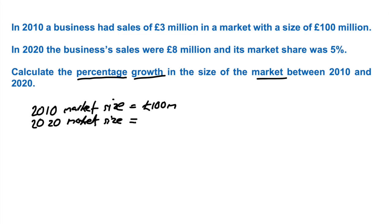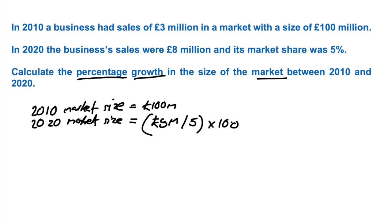If we're calculating the 2020 market size, then we would need to take the business's sales in 2020 of £8 million and then divide that by 5, times that all by 100 to see what the overall size of the market is.